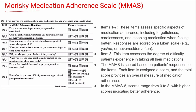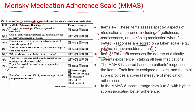Next is Morisky's Medication Adherence Scale (MMAS-8). It has eight questions: the first seven assess specific aspects of medication adherence such as forgetfulness, carelessness, and stopping medication, scored with yes/no or a Likert scale of never, seldom, or often. The eighth item assesses difficulty in taking medication. Scores range between 0 to 8, with higher scores indicating better adherence and lower scores indicating poorer adherence.